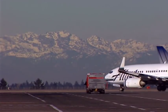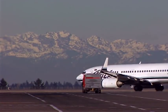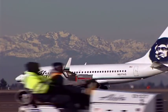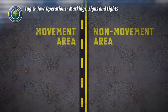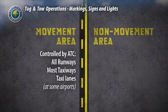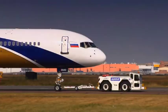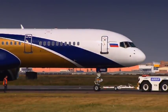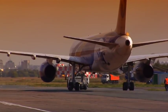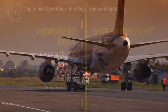There are two general zones at tower controlled airports within which aircraft and ground vehicles will be located at any given time: movement areas and non-movement areas. Movement areas include all runways, most taxiways, and taxi lanes at some airports. You are never allowed to enter or move within these areas without air traffic control clearance.